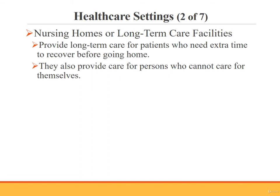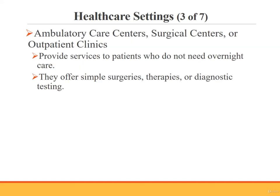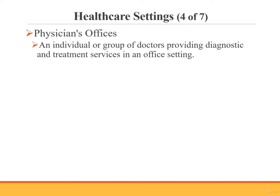A nursing home or long-term care facility provides care for patients who need extra time to recover from a surgery, illness, or injury before going home, as well as for persons who cannot care for themselves. An ambulatory care center, surgical center, or outpatient clinic is for patients who do not require overnight care — these facilities provide simple surgeries, therapies, and diagnostic testing. The physician's office is an individual or group of doctors providing diagnostic and treatment services in an office setting.